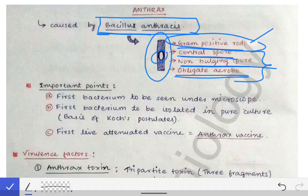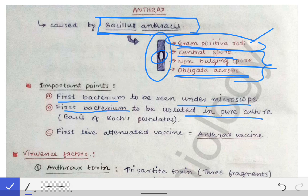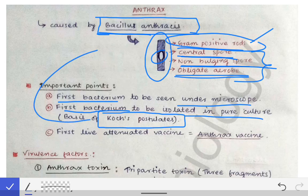From a historical point of view, anthrax is a very important bacterium. Anthrax was the first bacterium to be seen under the microscope, the first bacterium to be isolated in pure culture, and Koch's postulates — which we learned in the first chapter — were based on this anthrax itself.